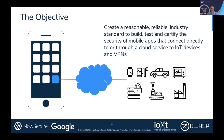The objective was to create a reasonable, reliable industry standard to build, test, and certify the security of mobile apps that connect — directly or through cloud services — to IoT things and VPNs. The key word here is certify. There are existing standards like OWASP on how to build and test, but there is no publicly available, publicly agreed-to certification regime. Because IOXT was having success certifying the security of devices, they thought it logical to extend that to mobile apps.